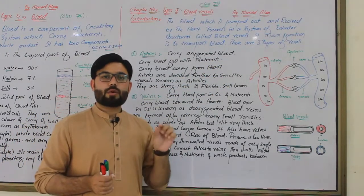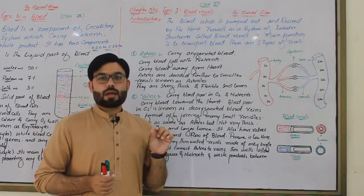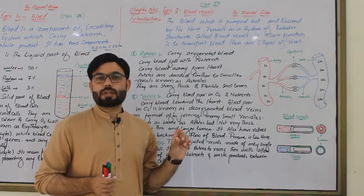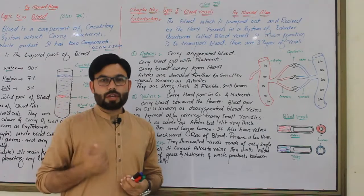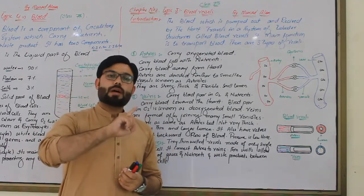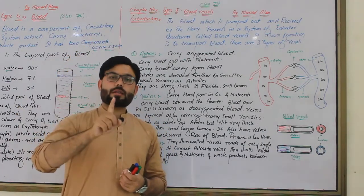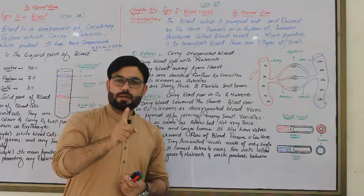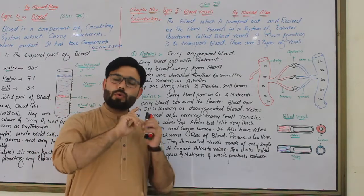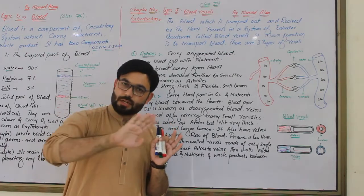If we consider the pulmonary artery, it is an exception — the pulmonary artery carries de-oxygenated blood, unlike other arteries which carry oxygenated blood.